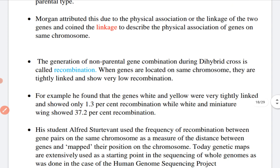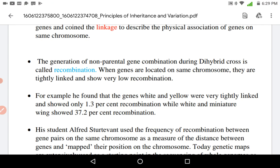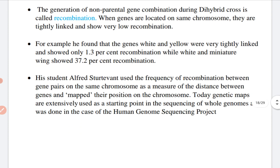For example, the genes for white and yellow are tightly linked and show only 1.3% recombination, while the genes for white and miniature showed 37.2% recombination — because when the genes are tightly linked, they show very little recombination. Morgan's students used the frequency of recombination between gene pairs on the same chromosome as a measure of distance between genes and mapped their positions on the chromosome using genetic maps. Today, genetic maps are extensively used as the starting point in genome sequencing, such as in the Human Genome Sequencing Project.